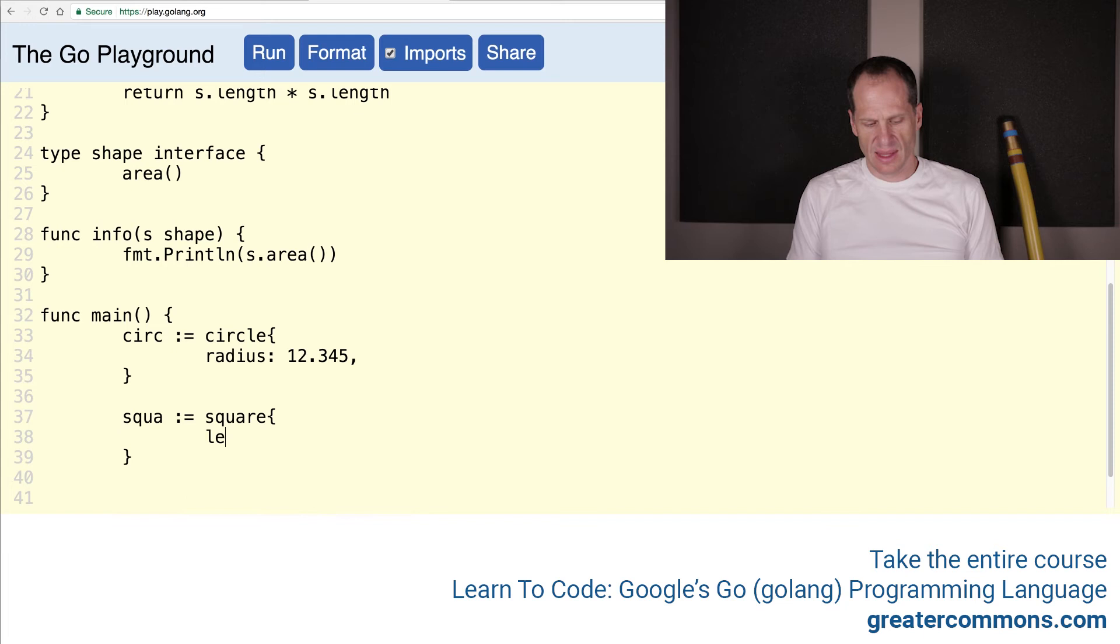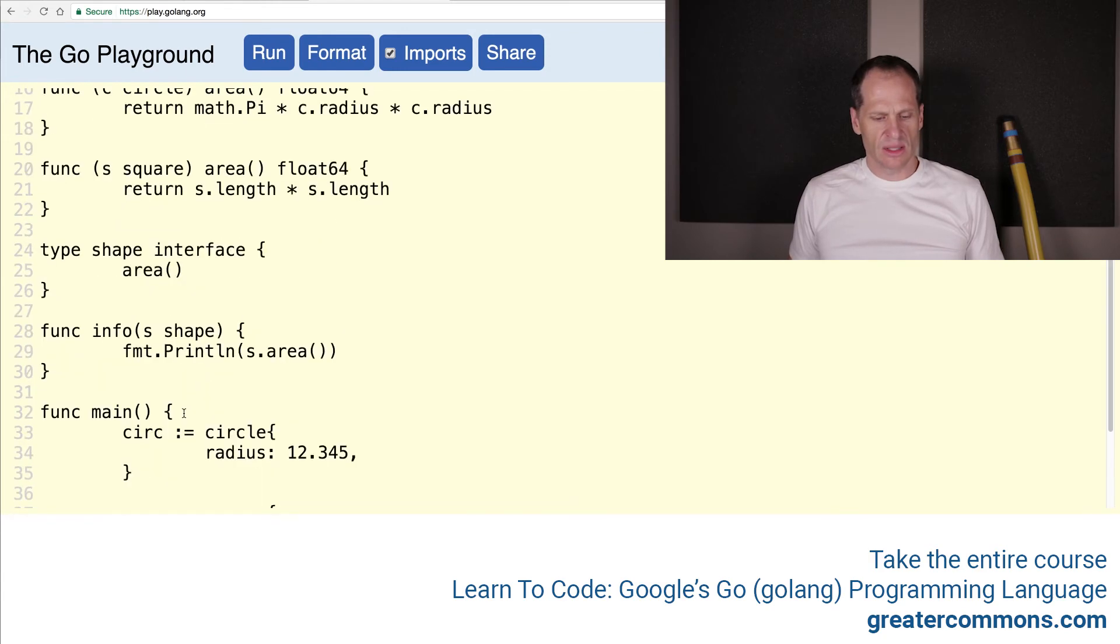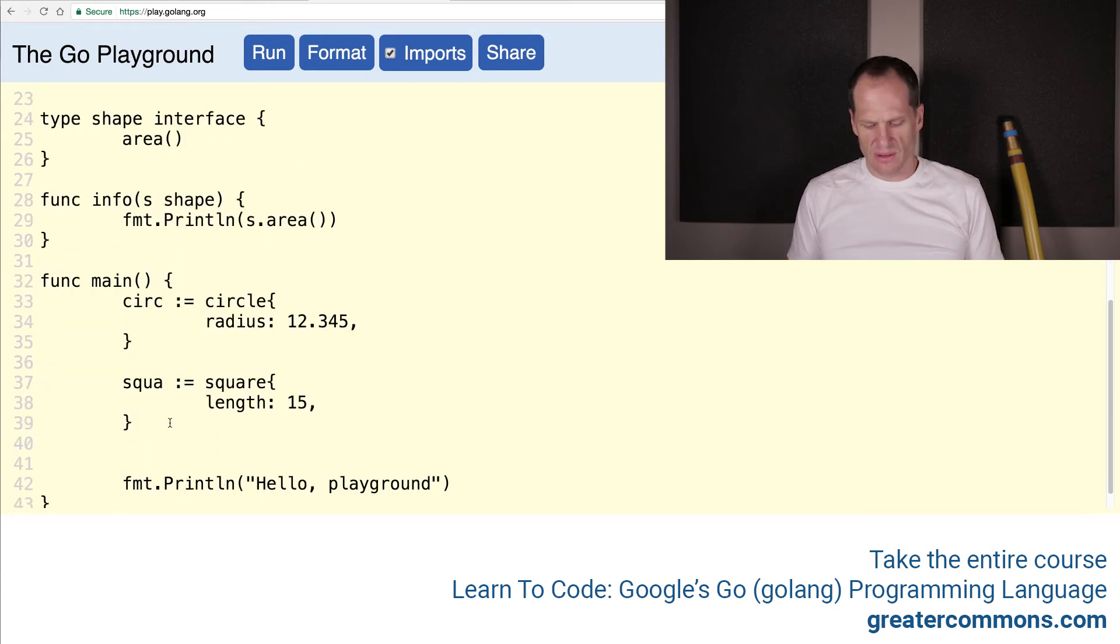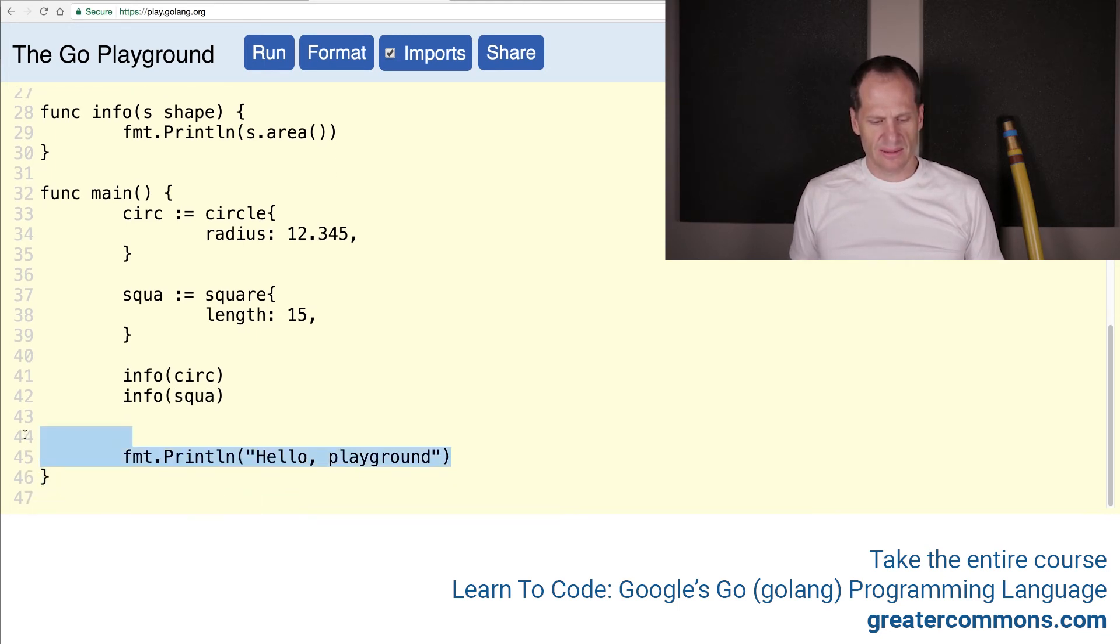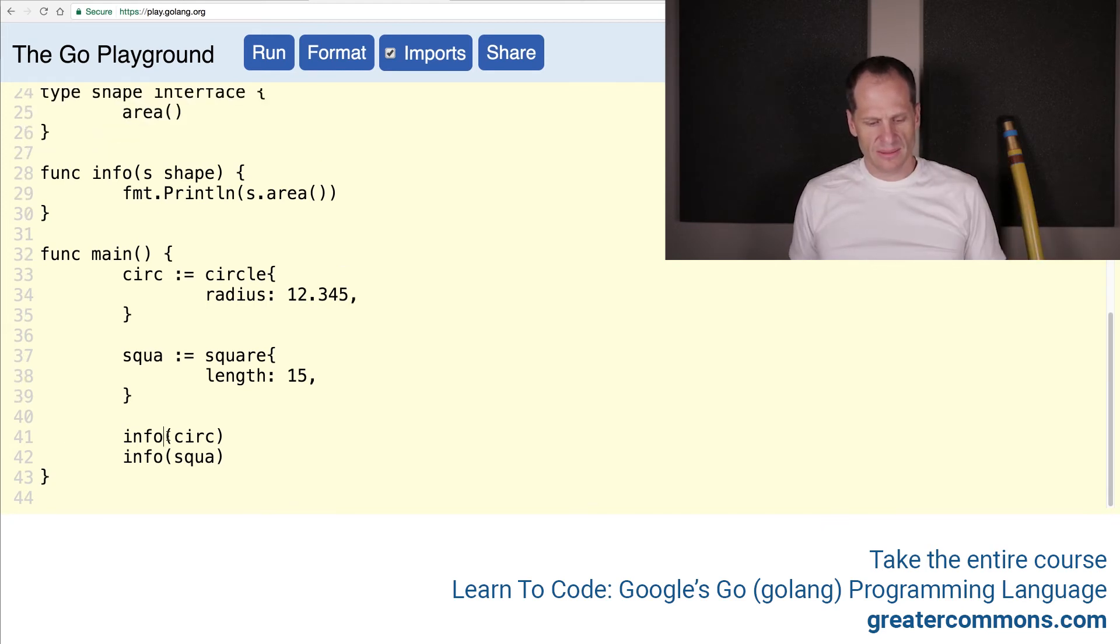And so now we want to call info and we're going to pass in our circ and we'll call info and we'll pass in our square. I like this example and we'll get rid of this. And we could say circle area and here we'll do square area.